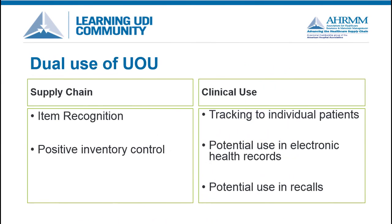We need to clearly differentiate the tracking of the packaged product, which is common to supply chain activity, from tracking the products which may be contained within those packages. When there are multiple devices contained in the lowest packaged level, there may be a need for clinicians to track the use of individual items on specific patients. The FDA created the Unit of Use concept to cover this precise need.